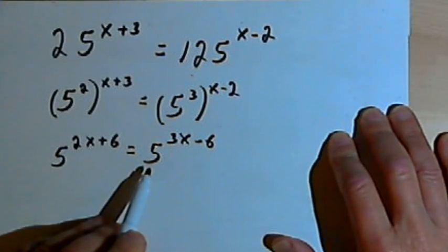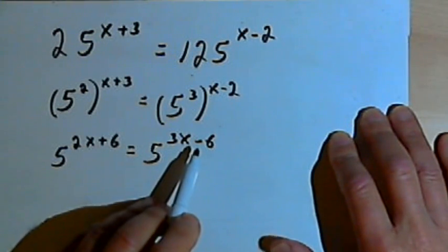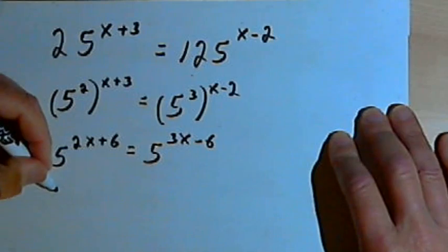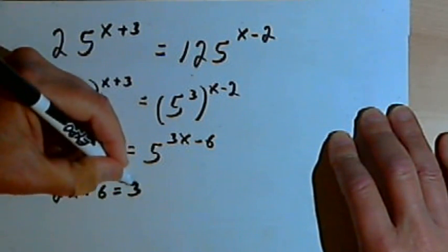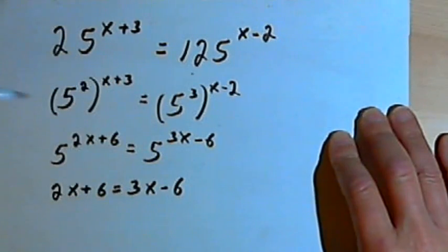Once the bases are the same, I can just set the exponents equal to each other. So I'm going to have 2x plus 6 equals 3x minus 6.